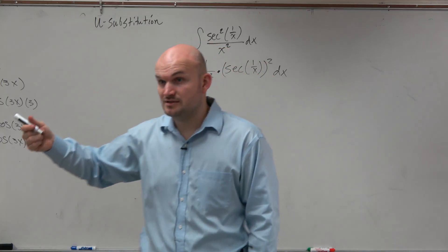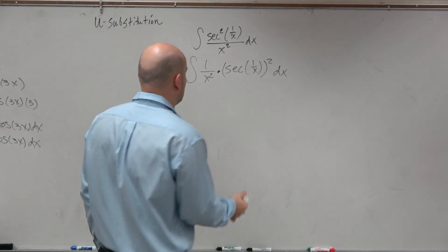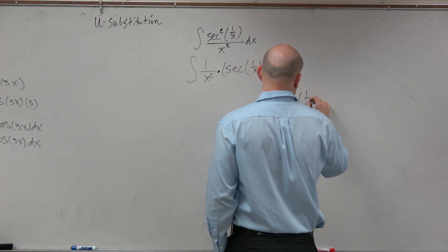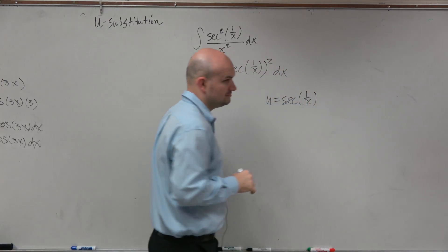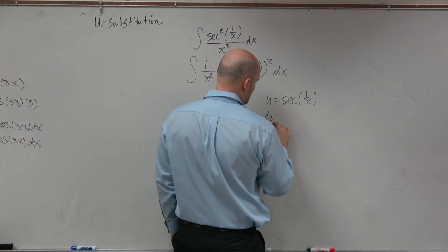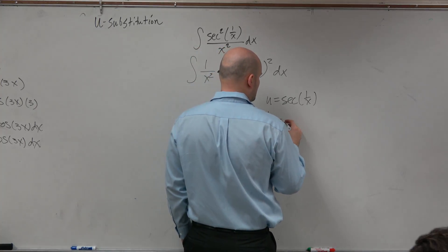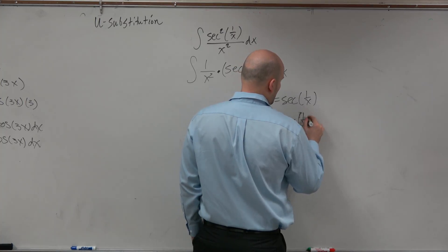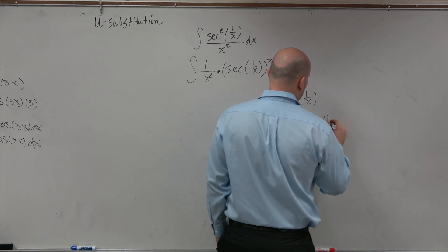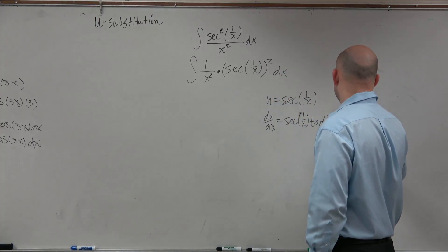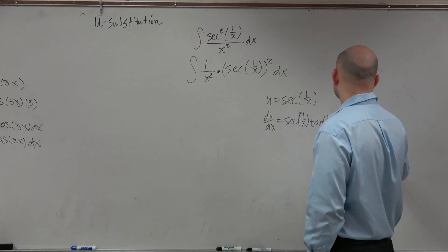That makes sense, right? It worked over there, so we can try the same thing. So let's have u equal to the secant of 1 over x. And therefore, if I do du over dx, that's going to be secant of 1 over x times tangent of 1 over x times the derivative of that, which is going to be a negative x to the negative second power.